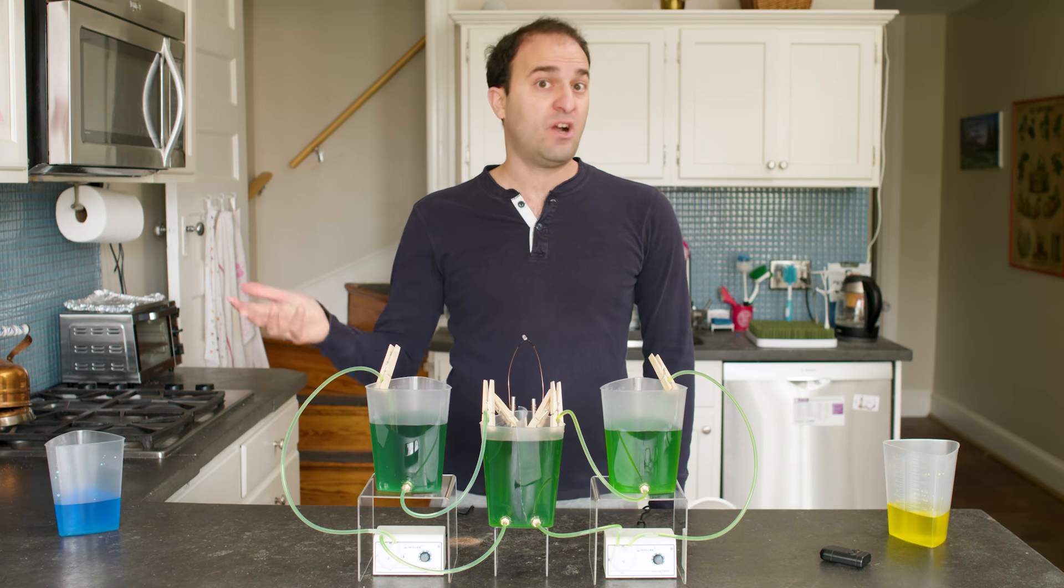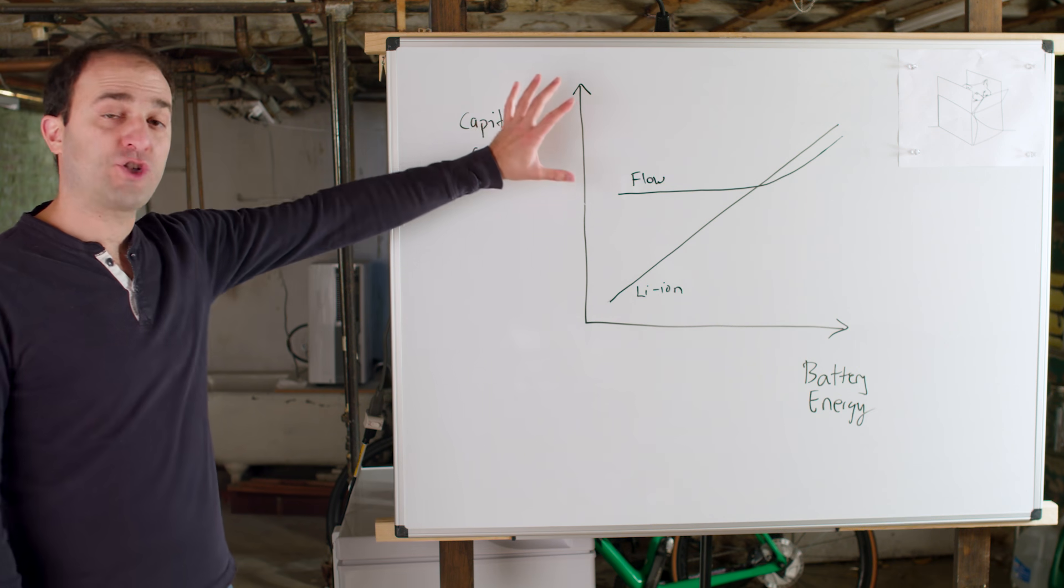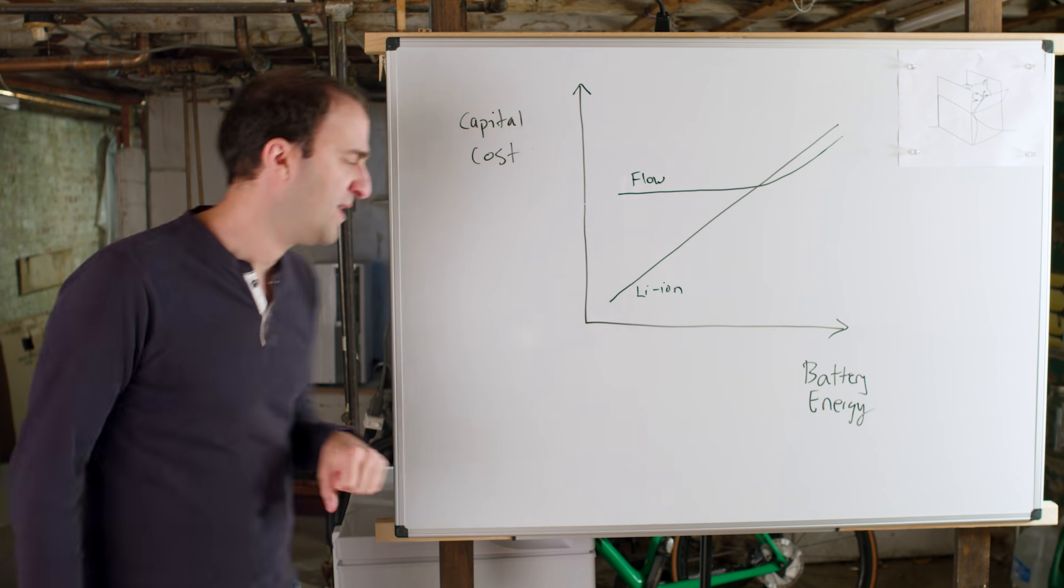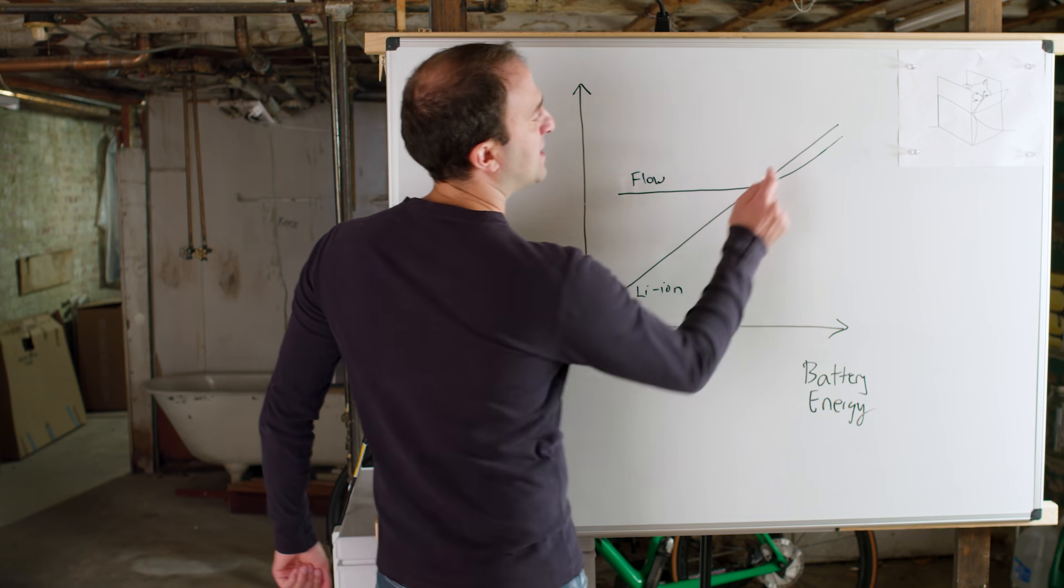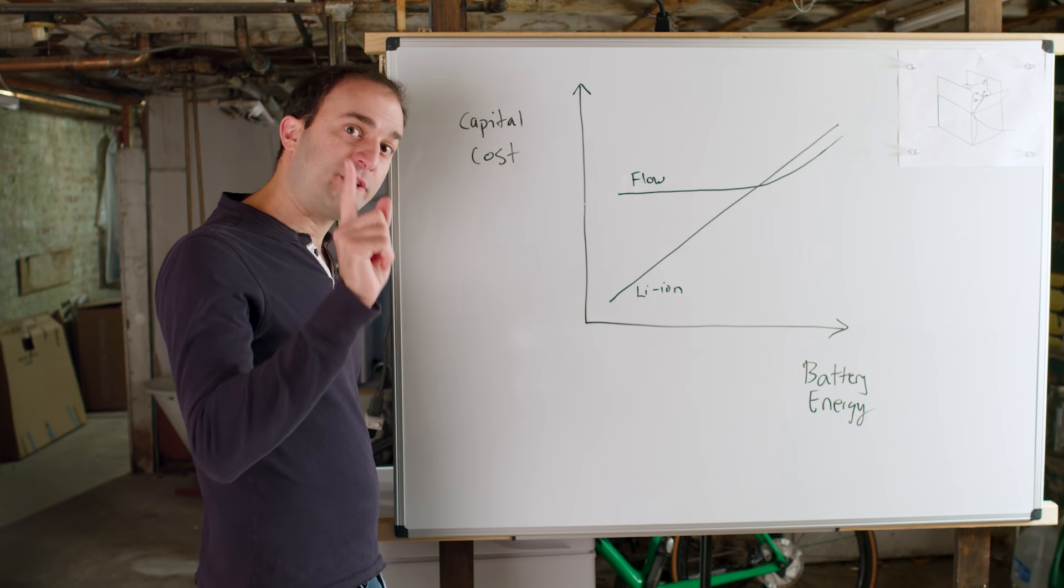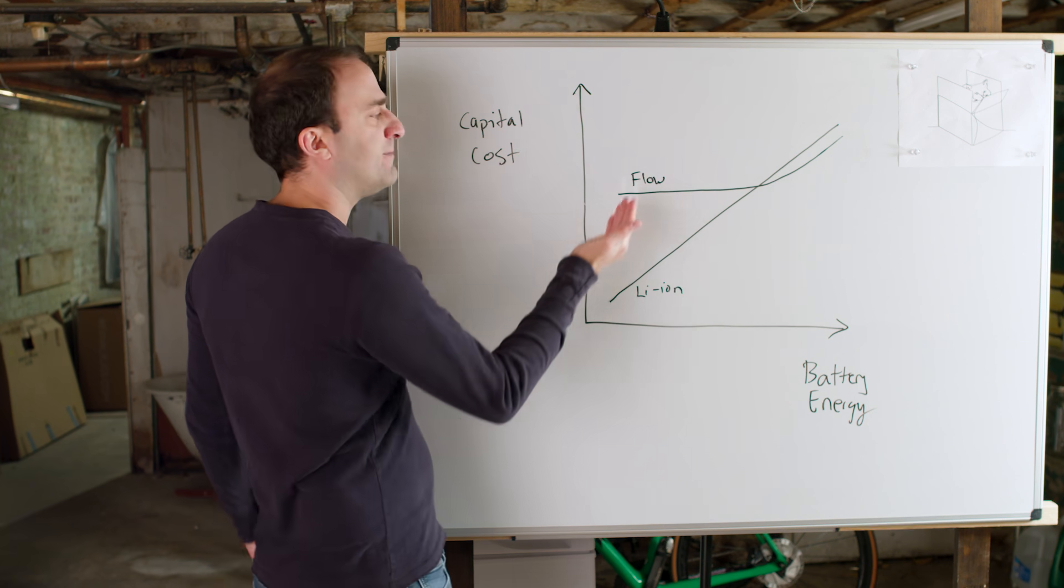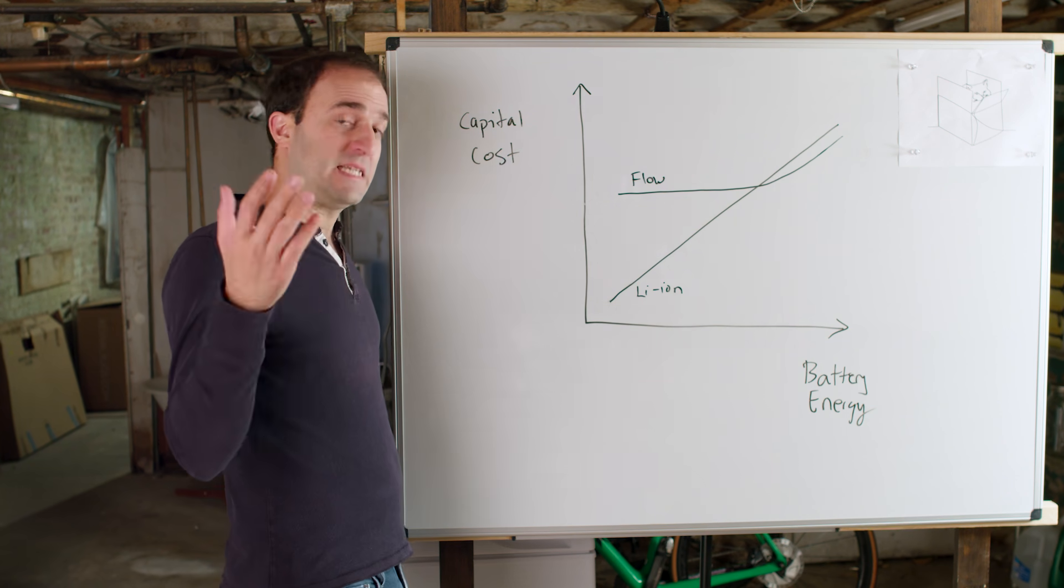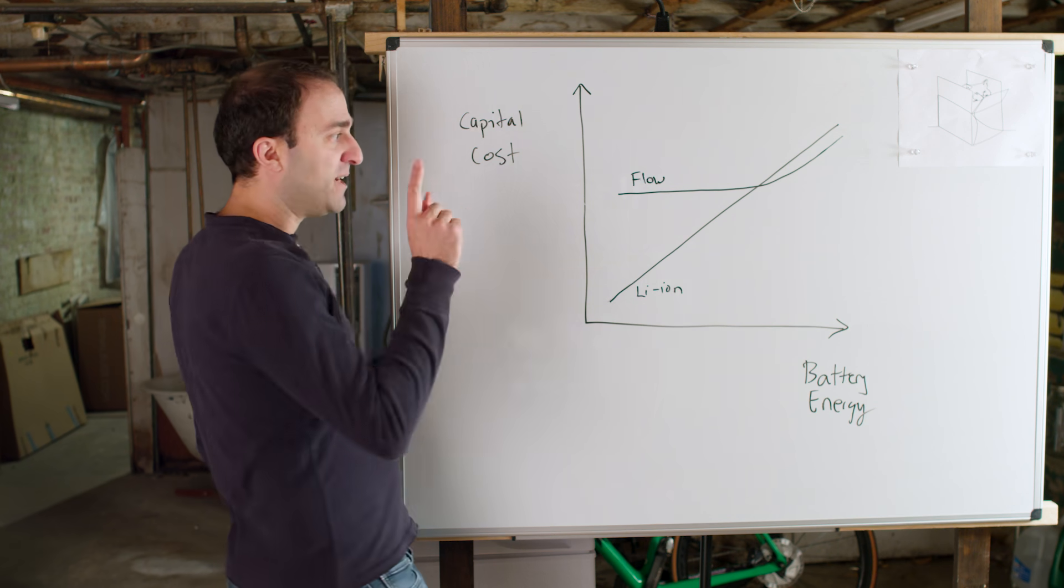This is a graph of how much it costs to build a new battery versus the capacity of that battery. Now, this straight line right here represents lithium ion. This curved line represents flow batteries. And you can see that for small batteries, flow batteries are way more expensive than lithium ion. This is because the stack is expensive. But eventually, this line actually crosses over the lithium line and flow batteries become cheaper.